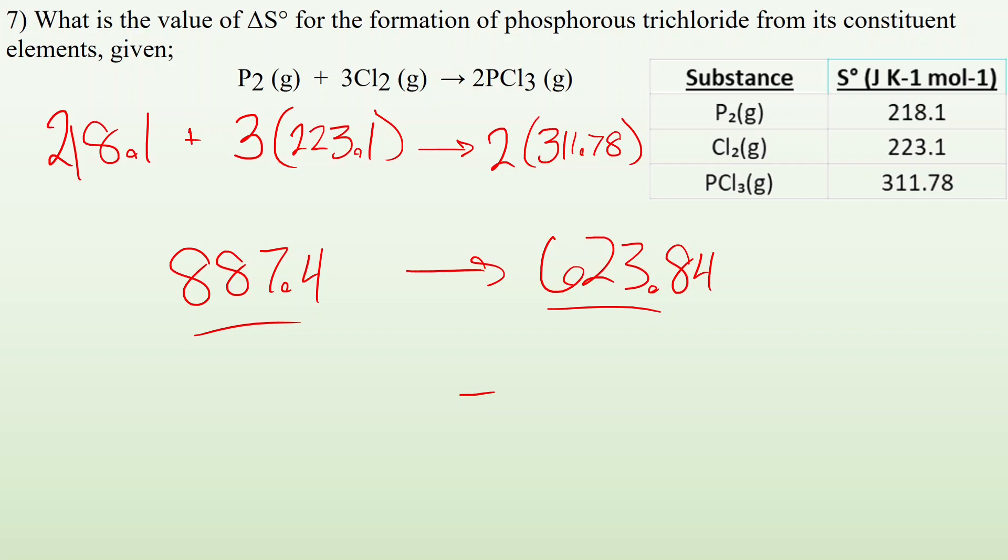So what is the difference between those two numbers? 887.4 and 623.84. There you go. Joules per mole Kelvin.